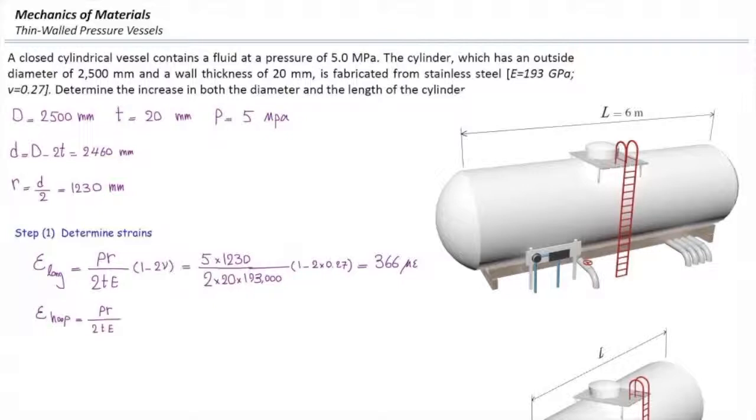So that would be PR over 2TE multiplied by 2 minus ν. Plugging in the values, that equals 1,378 microepsilon.